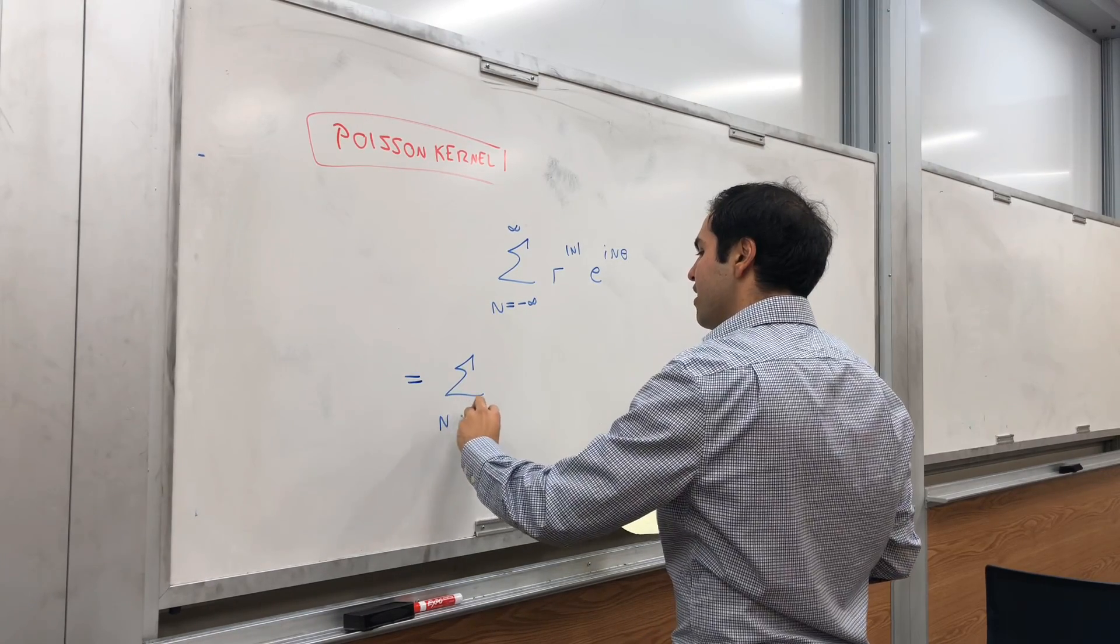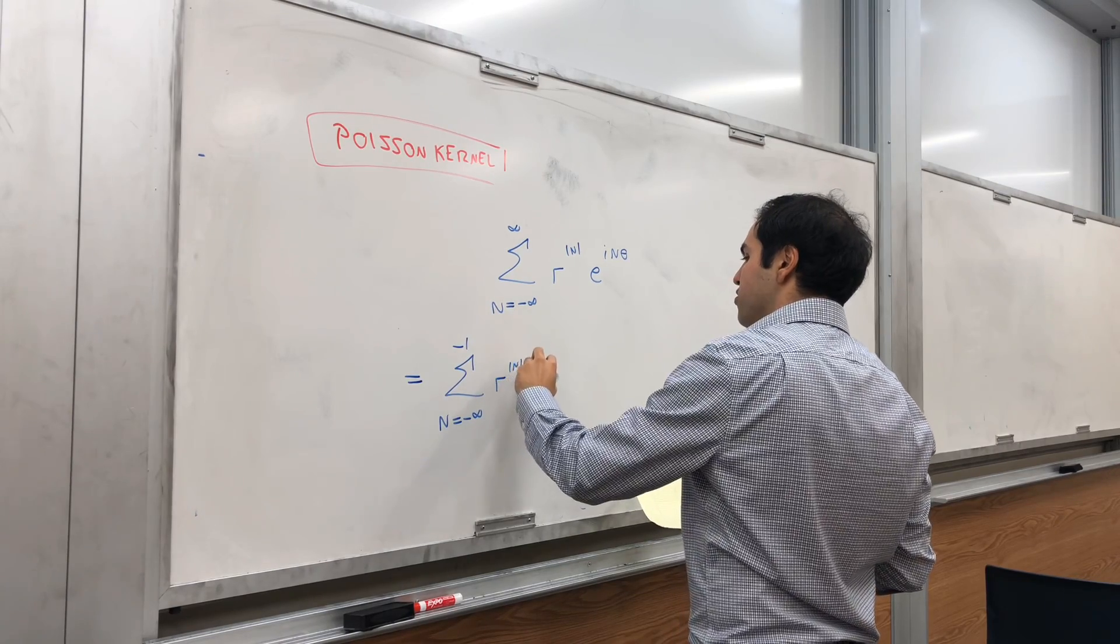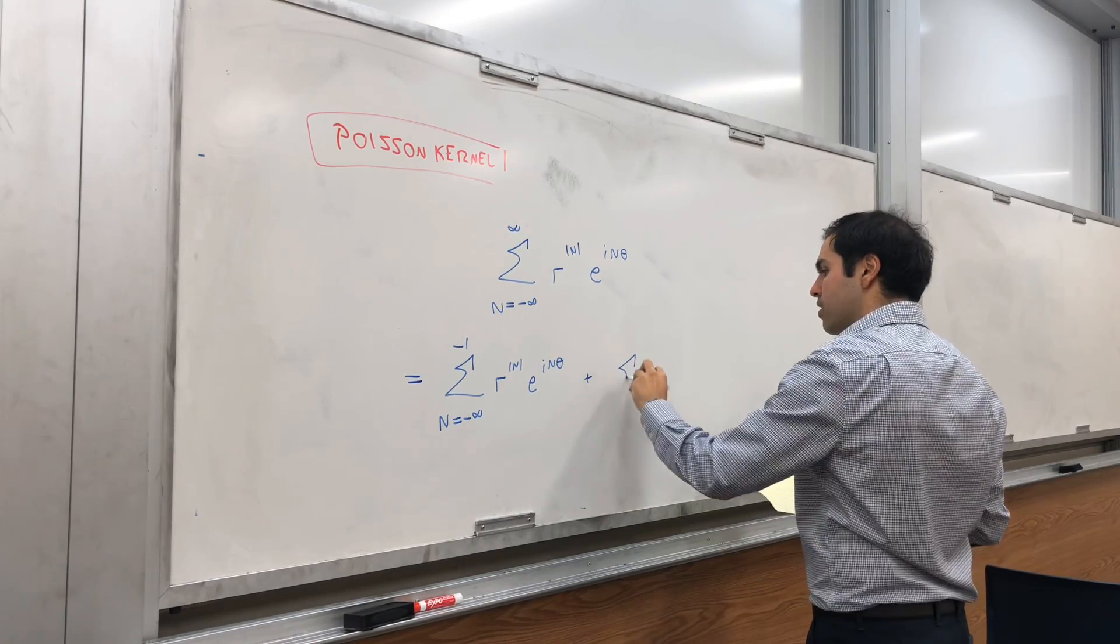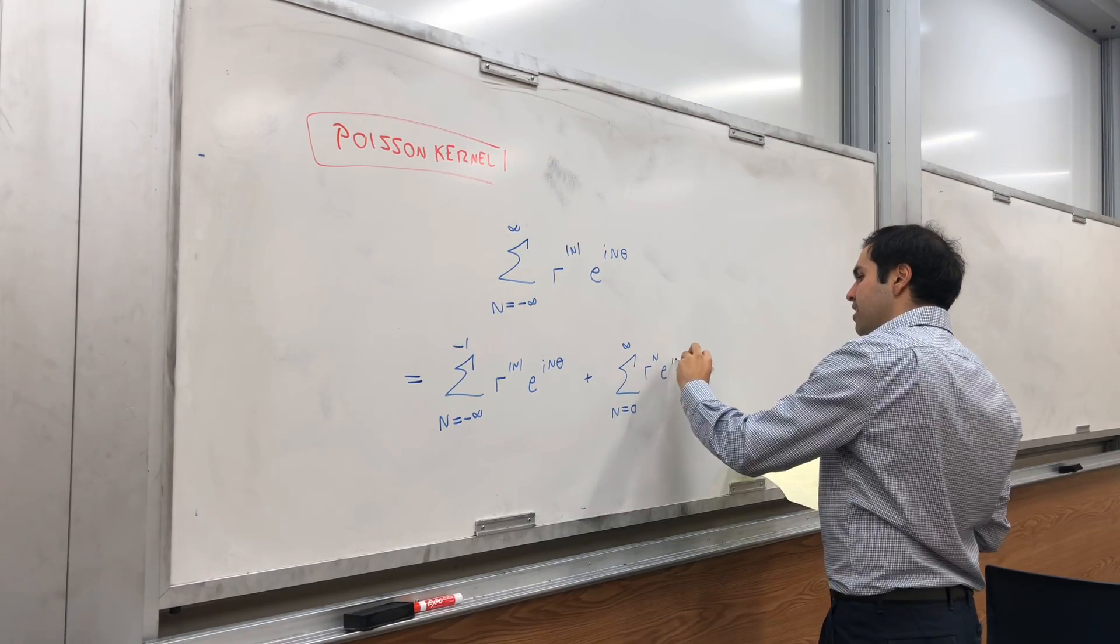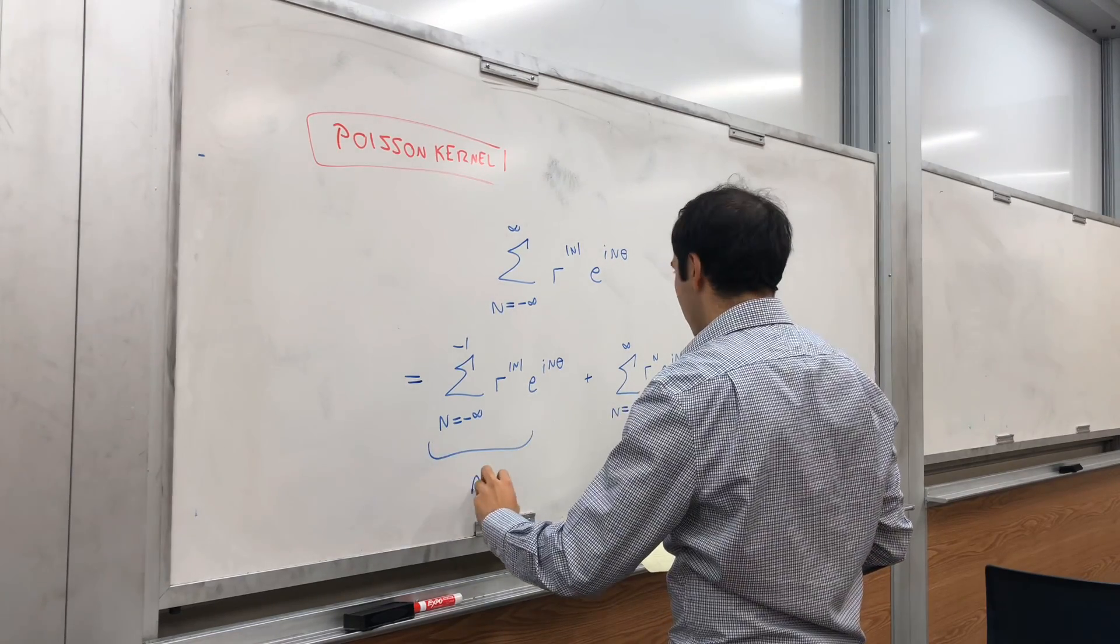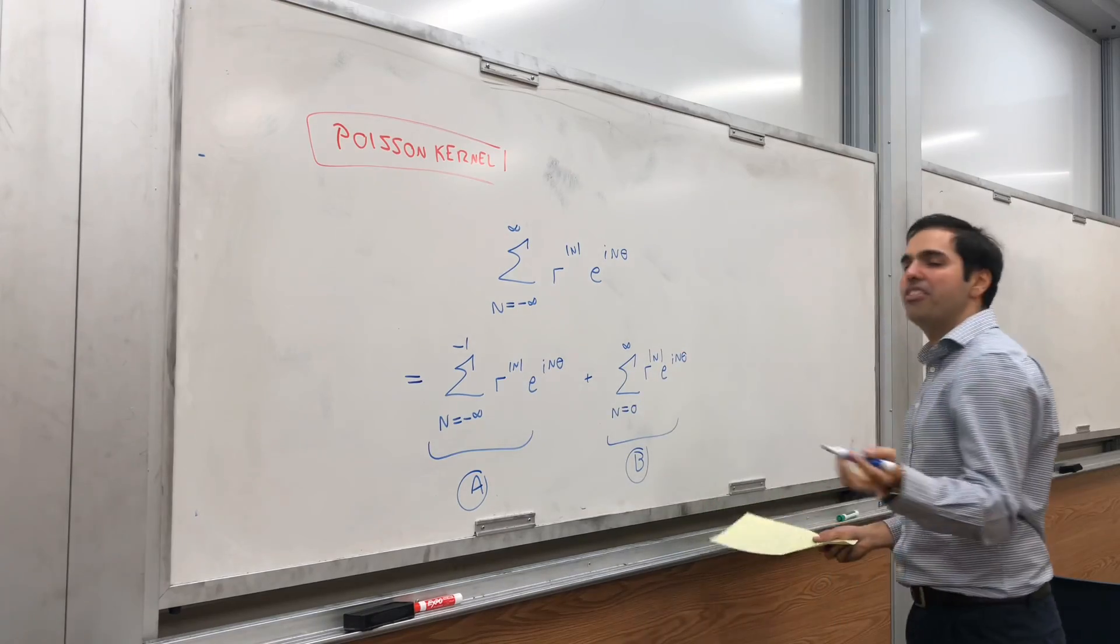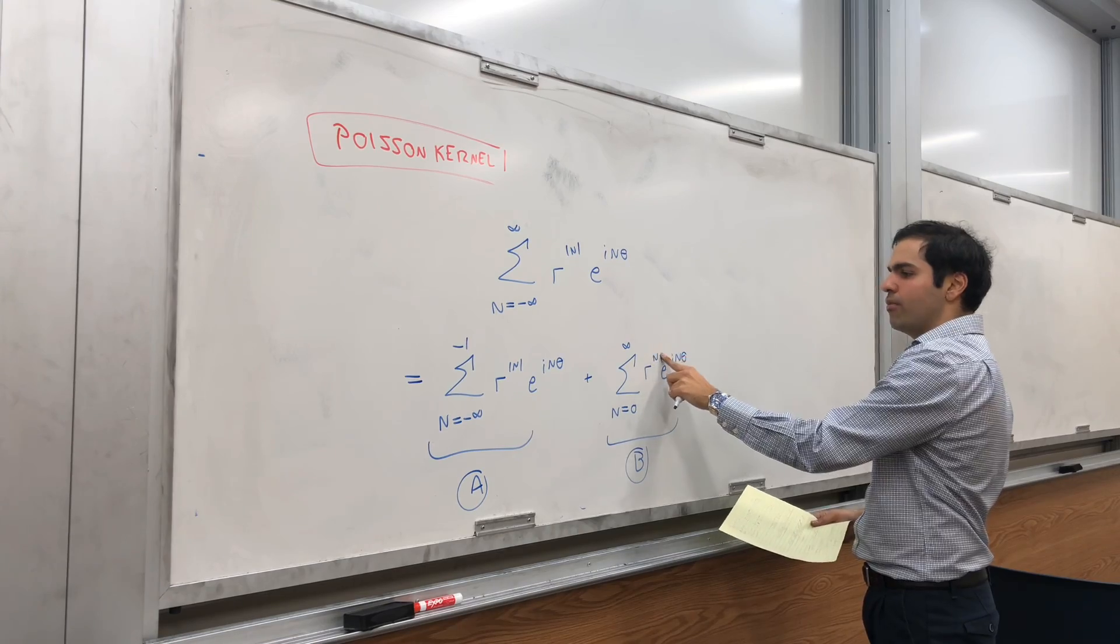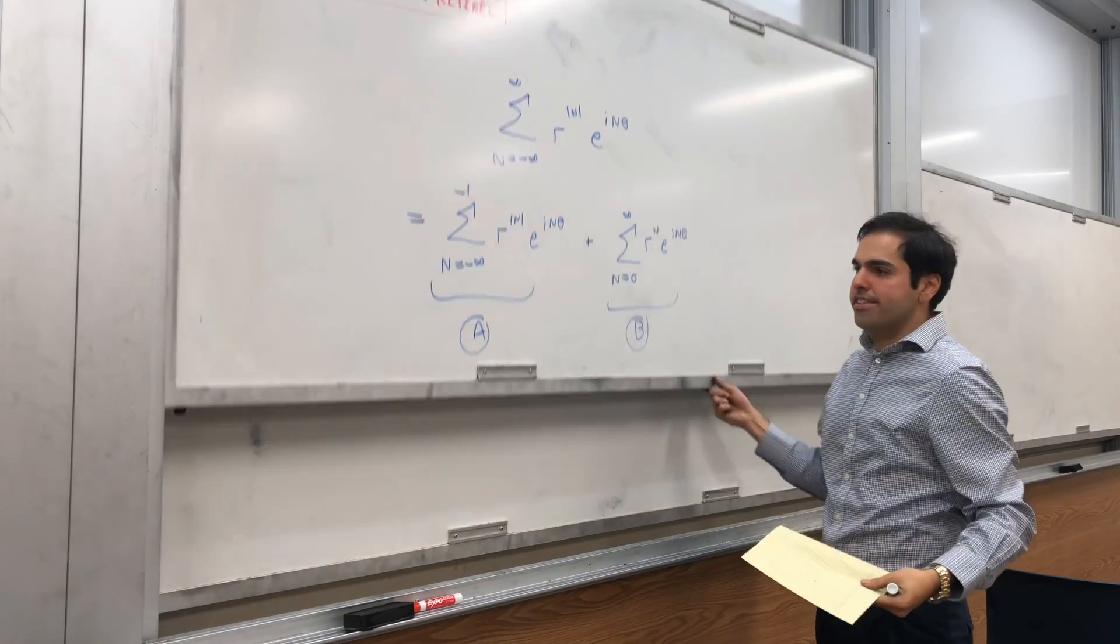That's the sum from n from negative infinity to minus one of r^|n| e^(inθ), plus the sum from n from zero to infinity r^n e^(inθ). And let's call those two things A and B. I skipped a little step. It's r to the absolute value of n, but if n is greater or equal to zero, we can just remove the absolute values. And in fact, let's deal with B first, because that's easier.